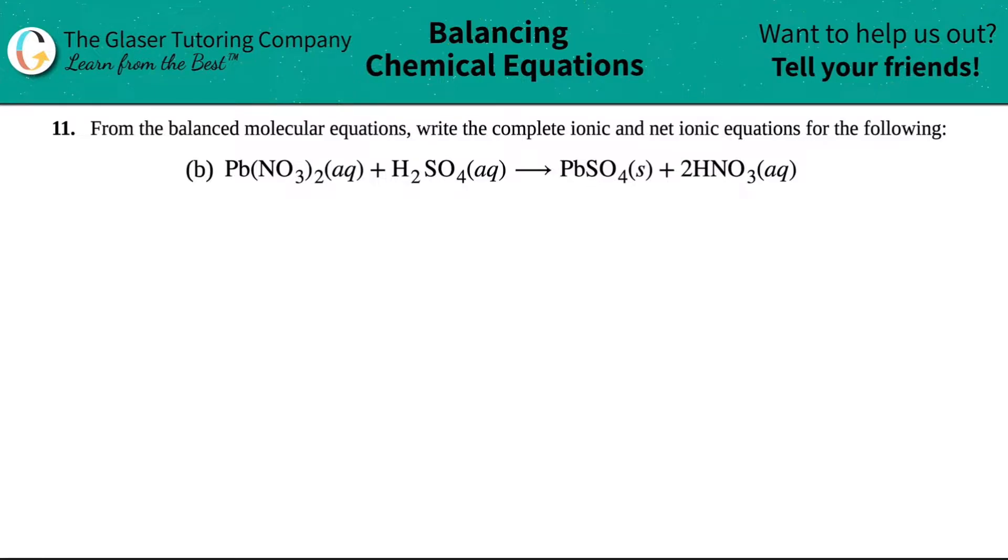Number 11. From the balanced molecular equations, write the complete ionic and net ionic equations for the following. And then we have letter B out of the bunch. So in this balanced equation, which thank God it's balanced, we have Pb(NO₃)₂ plus H₂SO₄ yields PbSO₄ plus 2HNO₃. And we have to do the ionic, the complete ionic and the net ionic equations.